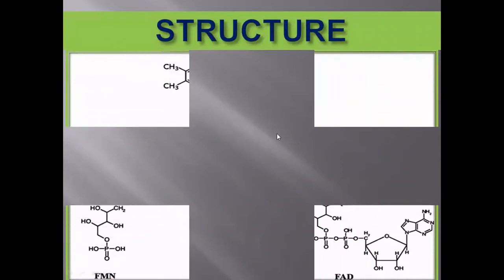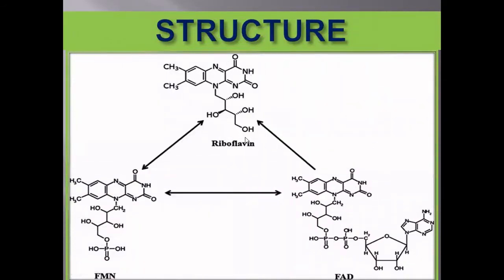This is the structure of the riboflavin molecule. Riboflavin itself is the inactive form. When a phosphate group is attached to its mononucleotide, it comes to its active form — Flavin mononucleotide (FMN). If you then attach an adenylic acid residue to FMN, this is called Flavin adenine dinucleotide, or FAD.